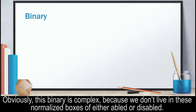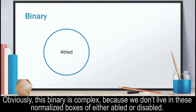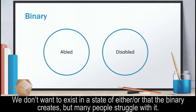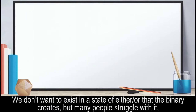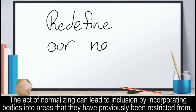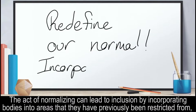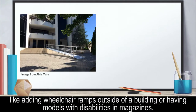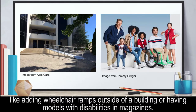Obviously, this binary is complex, because we don't live in these normalized boxes of either abled or disabled. We don't want to exist in a state of either-or that the binary creates, but many people struggle with it. One solution is to redefine what our normal is. The act of normalizing can lead to inclusion by incorporating bodies into areas that they have previously been restricted from, like adding wheelchair ramps outside of buildings or having models with disabilities in magazines.